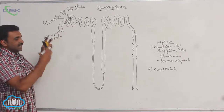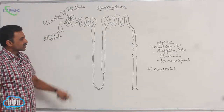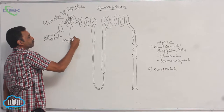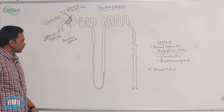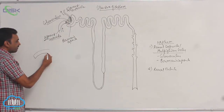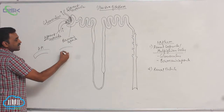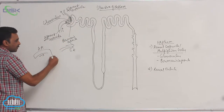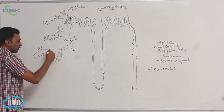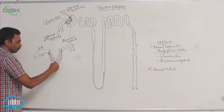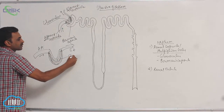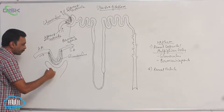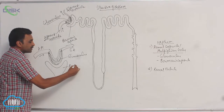The glomerulus is present in a cup-like structure. This cup-like structure is called Bowman's Capsule. The glomerulus is enclosed within Bowman's Capsule, and together they form the renal corpuscle, also called the Malpighian body, which contains both the glomerulus and Bowman's capsule.